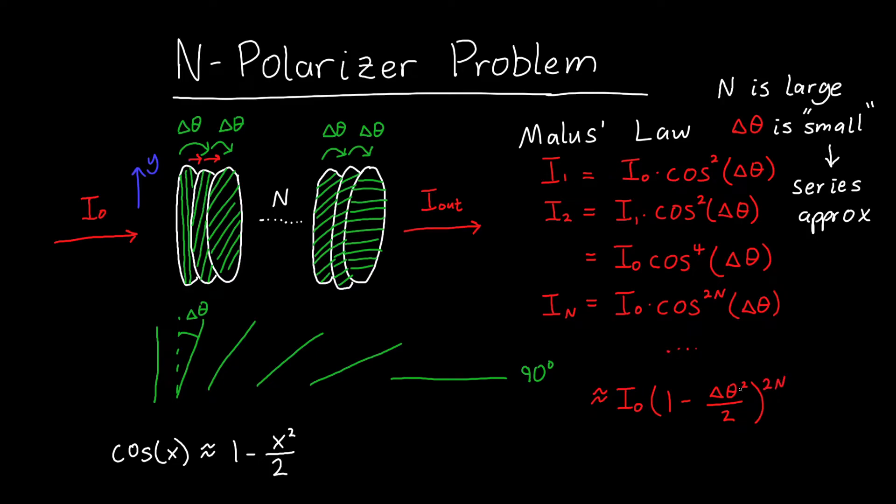We made a little progress, but this is still an ugly equation. Arguably, it's even more ugly than the one above. But because Δθ was small, this quantity is also small, so we can make another series approximation. The series approximation for (1 + x)ⁿ is approximately 1 plus n times x, and that makes our lives a whole lot simpler.